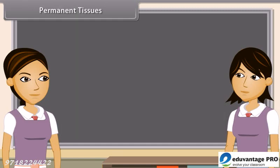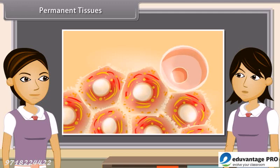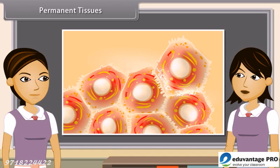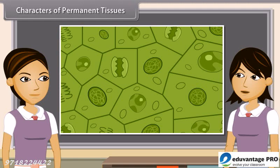After some duration, meristematic tissues lose their ability to divide, take up a specific role, and form a permanent tissue. This process is called differentiation. Differentiated meristematic tissues form different types of permanent tissues. In permanent tissues, cells are thin or thick-walled, living or dead, and mature. Their shape may be oval, rounded, polygonal, elongated, or fibre-like. They have intercellular spaces and their cytoplasm is vacuolated. Because they have lost the power of division, they do not help in growth.